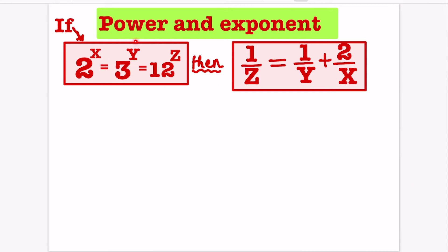Welcome to Intellectuals. In this tutorial, we are going to solve an if-then equation: given 2 power x is equal to 3 power y equal to 12 power z, then we have to show that 1 by z is equal to 1 by y plus 2 by x.